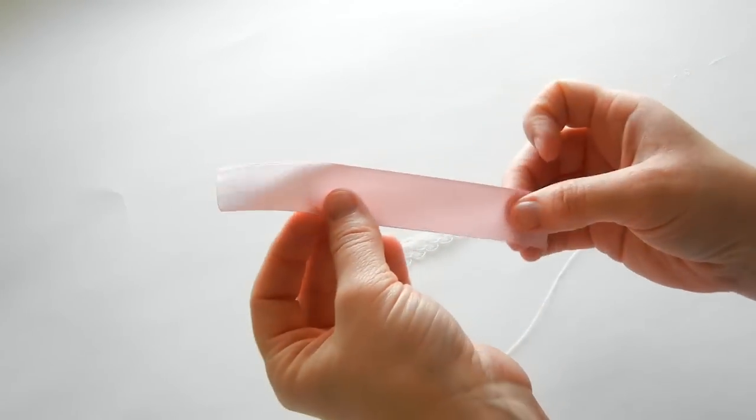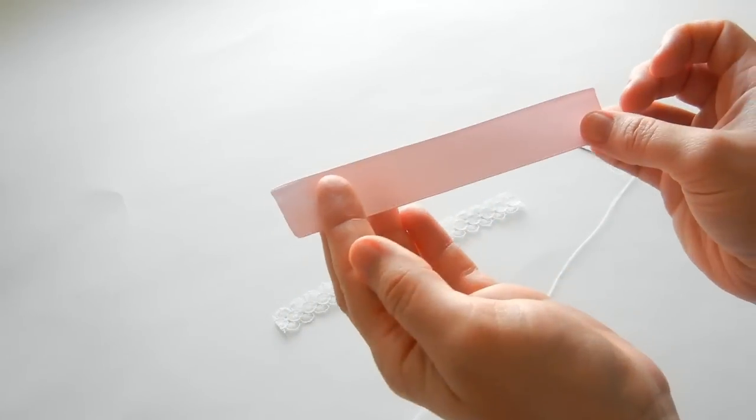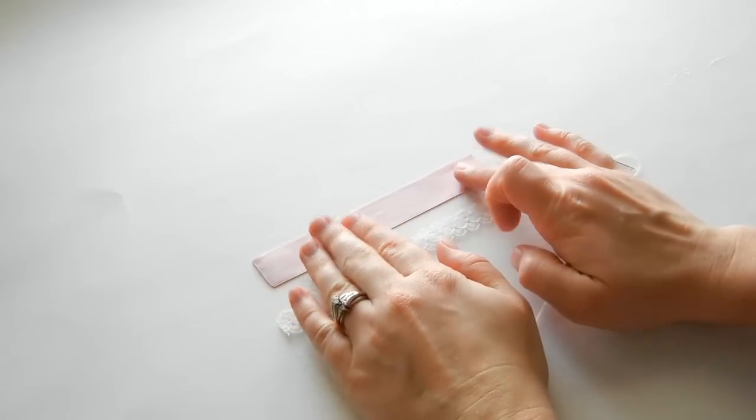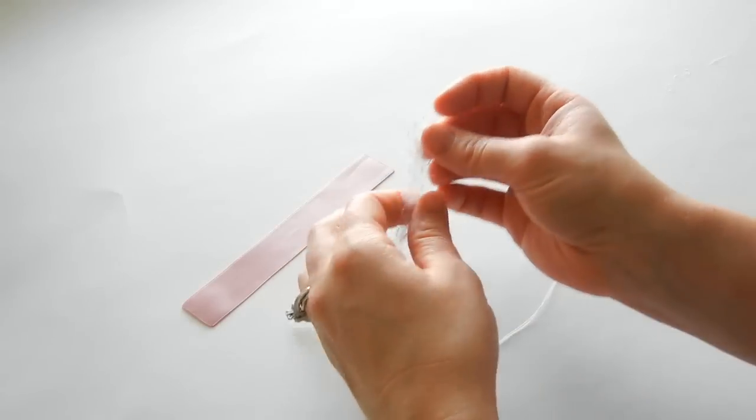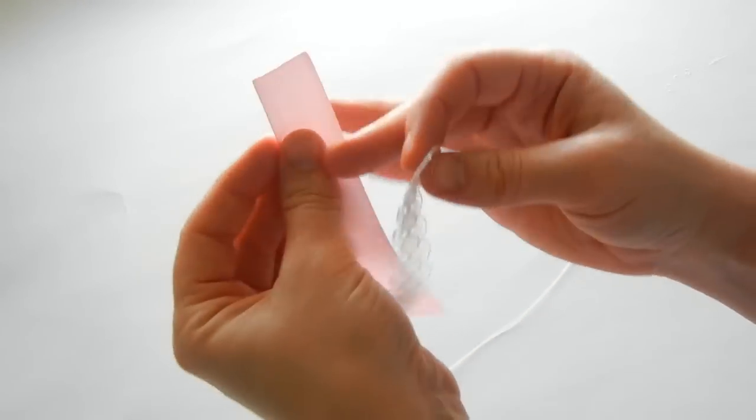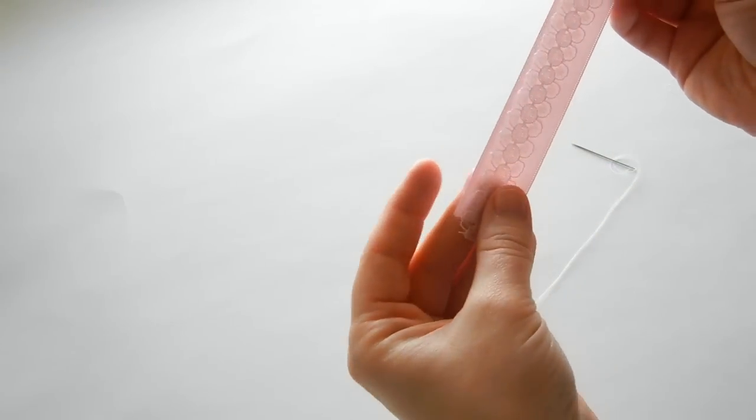Take your ribbon and cut it to five and a half inches. You can cut it longer or shorter if you'd like, and you can also use one and a half inch ribbon. Cut your lace to five and a half inches and make sure to seal your ends on the ribbon.